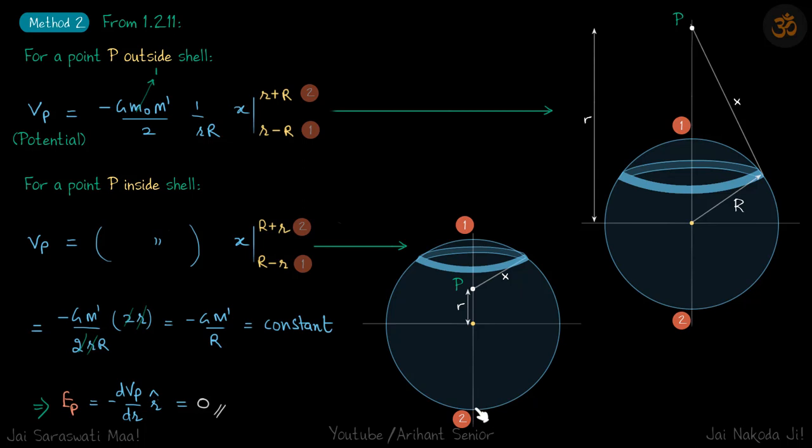At this point, the value of x is simply R minus small r, so capital R is the radius of the shell. So this x at point 1 will be capital R minus small r to this point. At this point, x will be capital R plus small r, so limits will be this to this.